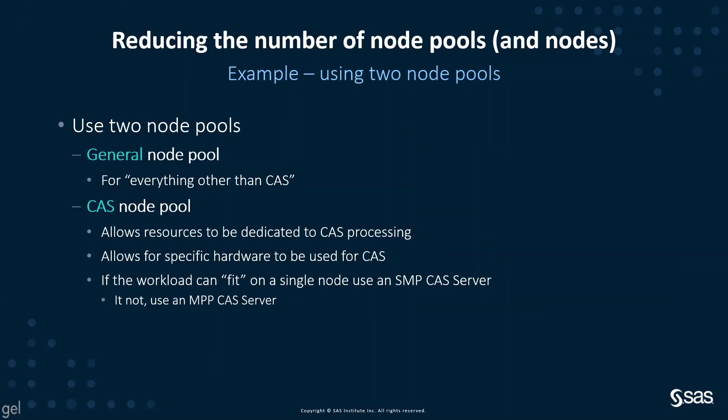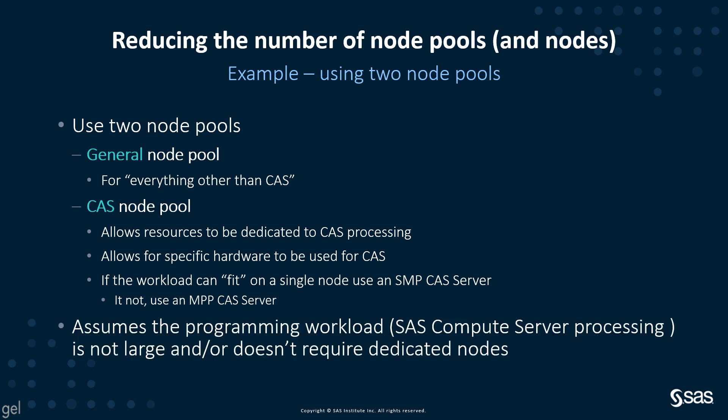The first of two examples uses two node pools. In this example, we have a general node pool set up for everything other than CAS, and then a CAS node pool which allows resources to be dedicated to CAS processing. It also allows us to select specific hardware or instance types for running the CAS pods. If the workload can fit on a single node, we could use an SMP CAS server; otherwise, we could use an MPP CAS server. This also assumes that the programming workload or SAS Compute Server processing is not large or doesn't require dedicated nodes.